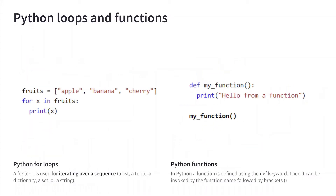Upping the complexity, let's look at loops and functions. The most important loop we'll use is the for loop, which iterates over a sequence of things. A sequence can be a list, a tuple, a dictionary, a set, or even a string — iterating over each character.